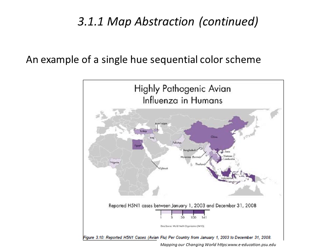Here's an example of a single-hue sequential color scheme — in this case, a map of pathogenic avian influenza where the ranges go from no cases up to a larger number of 141 cases being reported during a particular time period.